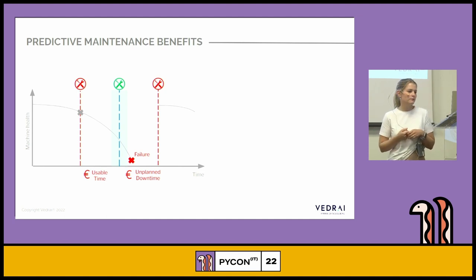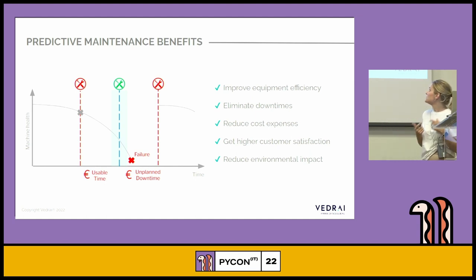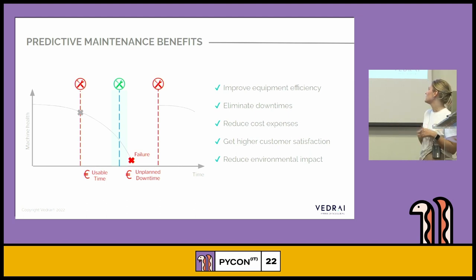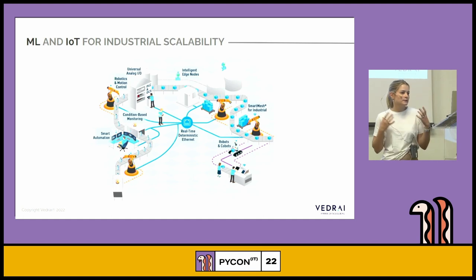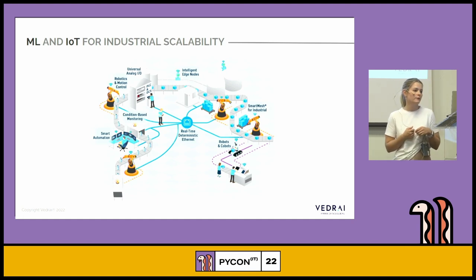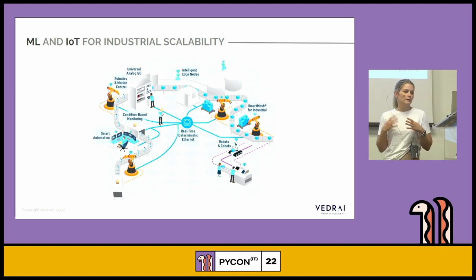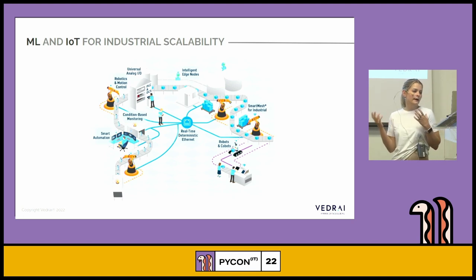The main predictive maintenance benefits are: improving equipment efficiency, eliminating downtime, reducing costs, getting higher customer satisfaction, and sometimes reducing environmental impact. We can do this now because of the fourth industrial revolution — due to digital transformation and computer control, we are able to collect, process, analyze and visualize huge amounts of data.